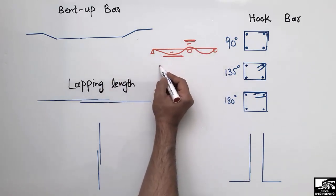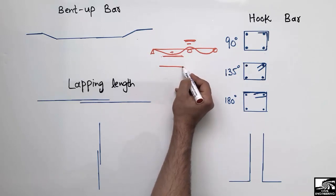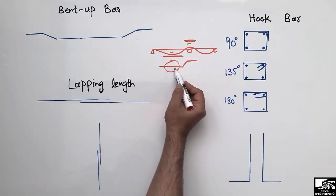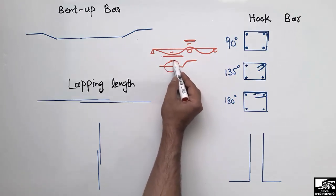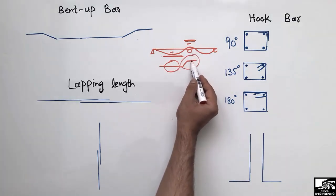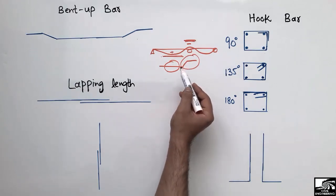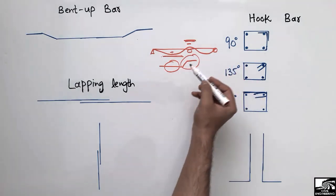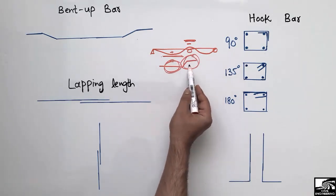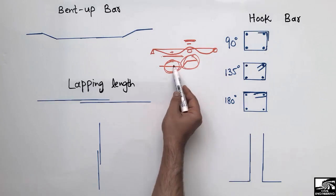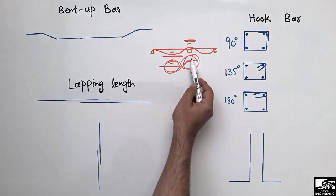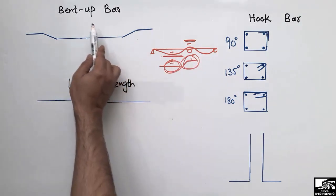The reinforcement goes along the bottom and is then bent upward, so it can perform two roles. It resists the positive bending moment at the bottom and the negative bending moment at the top near the support. So with one bar we can resist both positive and negative bending moment — that's why we use bent-up bars.